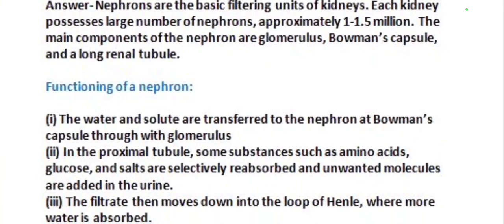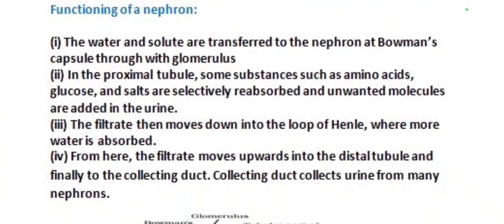Water and solutes are transferred to the nephron at Bowman's capsule through the glomerulus. In the proximal tubule, some substances such as amino acids, glucose and salts are selectively reabsorbed and unwanted molecules are added to the urine. The filtrate then moves down into the loop of Henle, where more water is absorbed. From here, the filtrate moves upwards into the distal tubule and finally to the collecting duct, which collects urine from many nephrons.